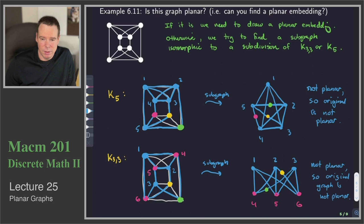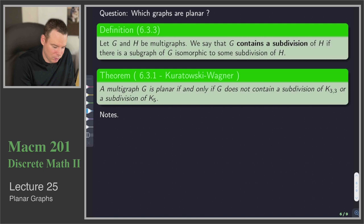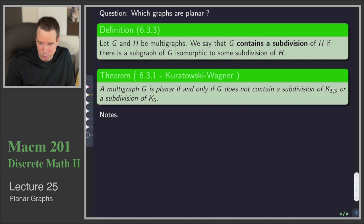This gives us a method for showing a graph is not planar. If we can find either a K5 or a K33 subdivision inside it, then the graph isn't planar. In fact, it turns out that K5 and K33 are precisely the obstacles for planarity — a graph is not planar if and only if one of these graphs is lurking inside it. That's the Kuratowski-Wagner theorem.